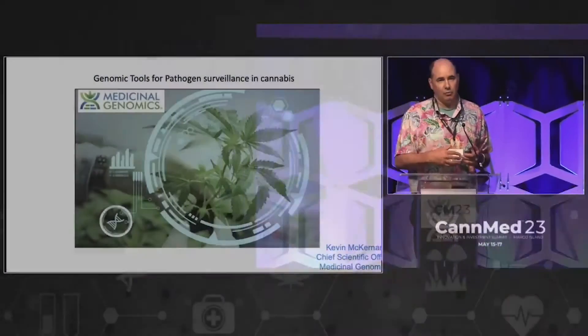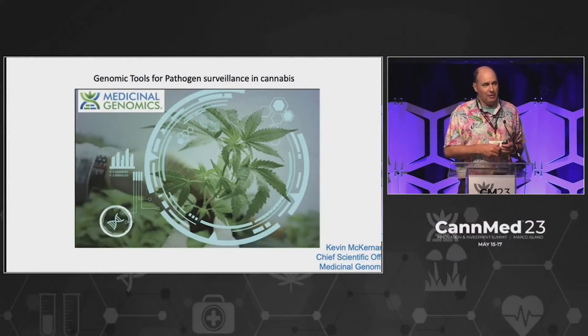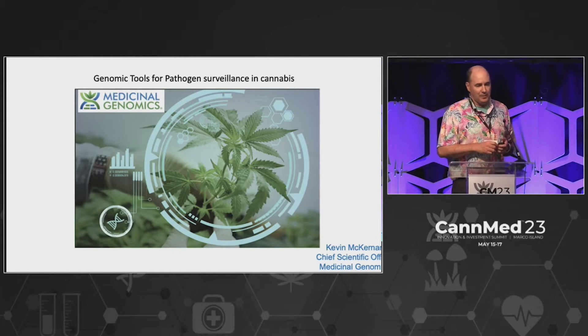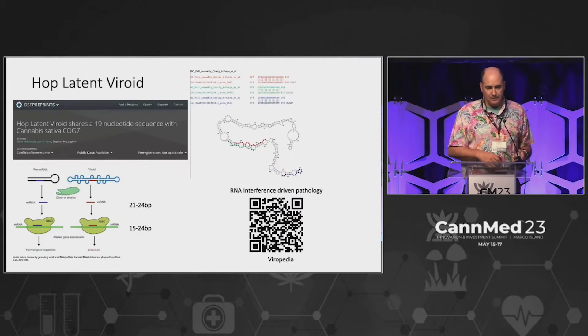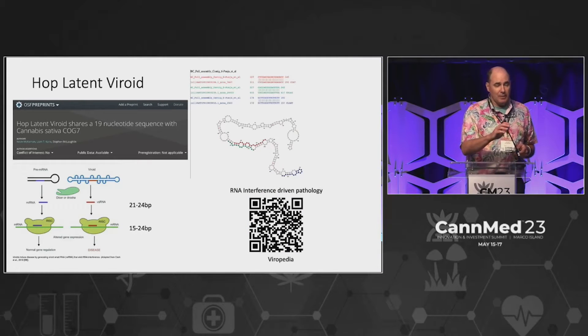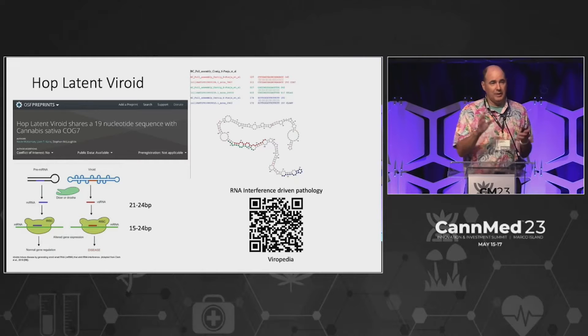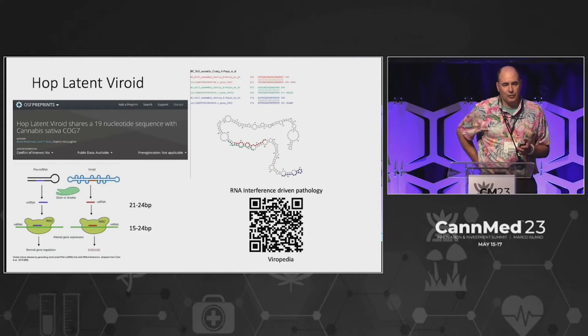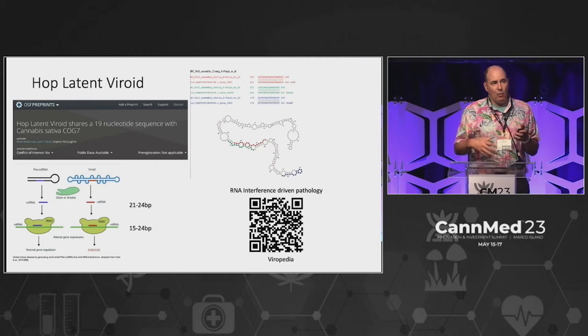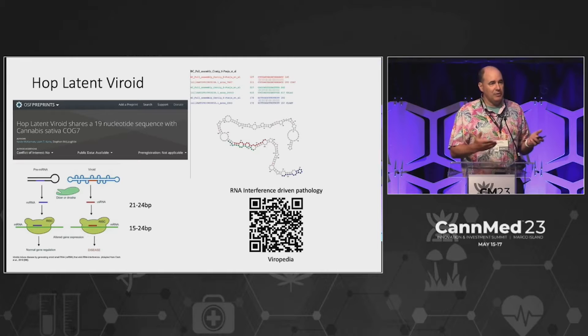We're going to go over the molecular biology that's going on with hop latent viroid. Much of what we know about it, we are assuming from what we know about other viroids that infect other plants. So there are some leaps being made here, but I think you'll find by the end of this that they're beginning to resonate with what we're seeing in other plants. What I'm going to try to do is describe what we think this is doing in the plant, and maybe that will guide us in the direction of breeding away from this problem.